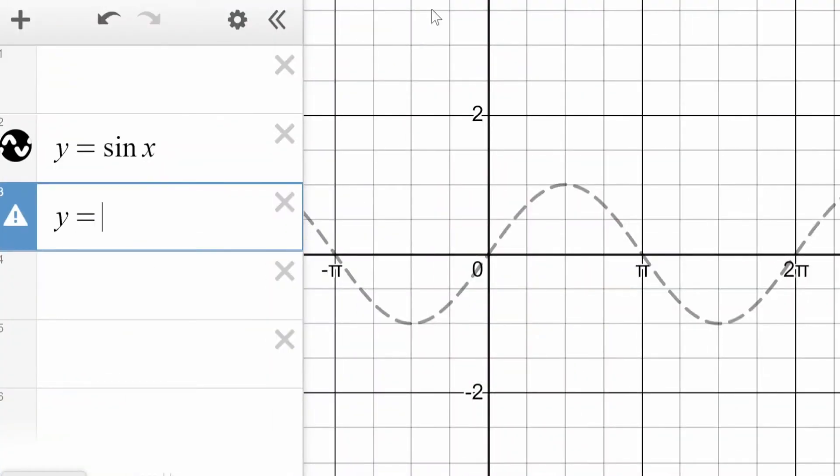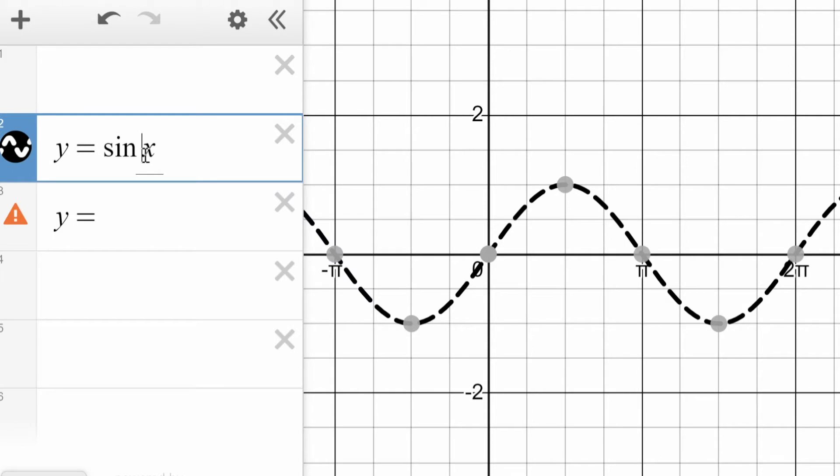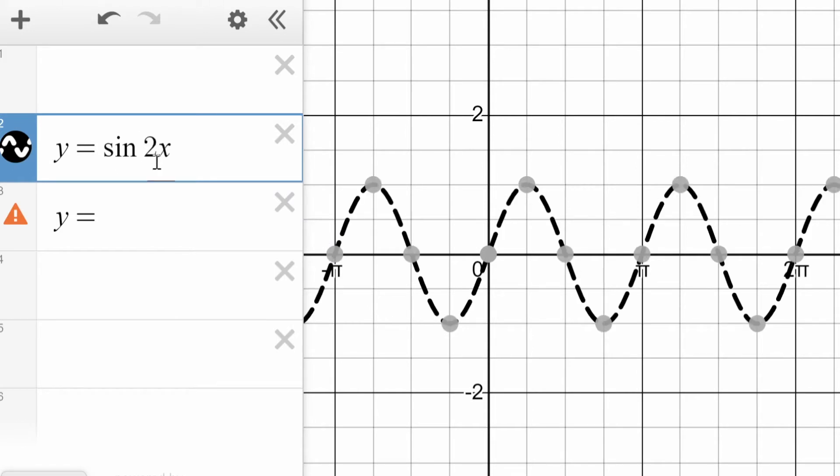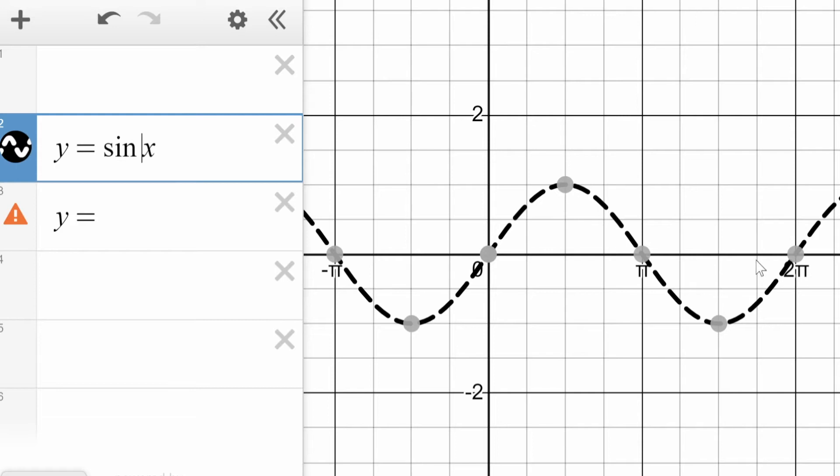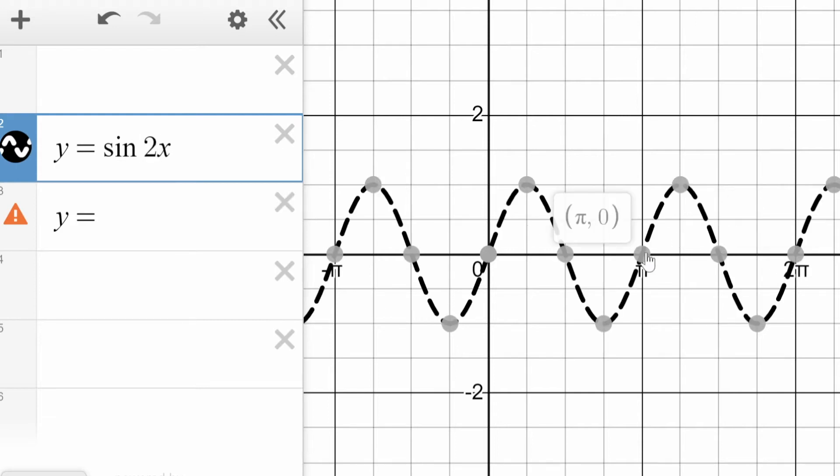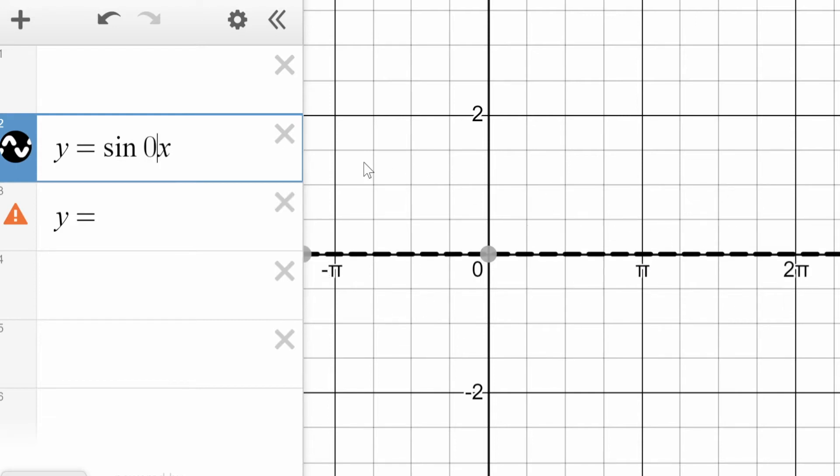Now up to this point, when we've experimented with changing the period of a function, we've done things like putting a 2 in here, a number bigger than 1 like that, and the period's gone from being 2π to being π, or we've put 0.5 in there, a number smaller than 1, and the period's gone from being 2π to being 4π. But all those changes that we make when we've put a rational number in here, the period has always involved π.